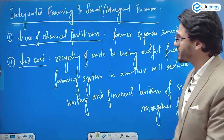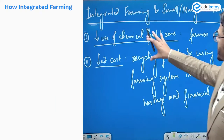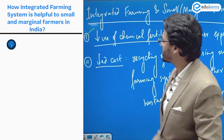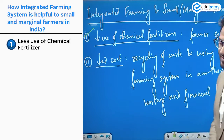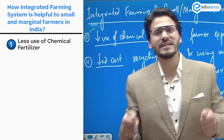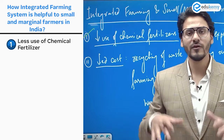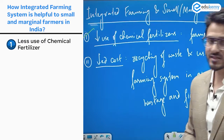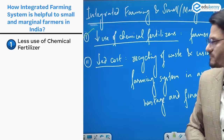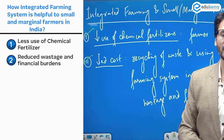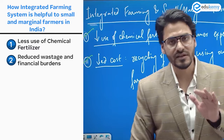Number one: less use of chemical fertilizers. The over-dependency of farmers on chemical fertilizers can be reduced through integrated farming. Number two: reduction in costs and expenses, because waste output from one farming system can be used as input in another.